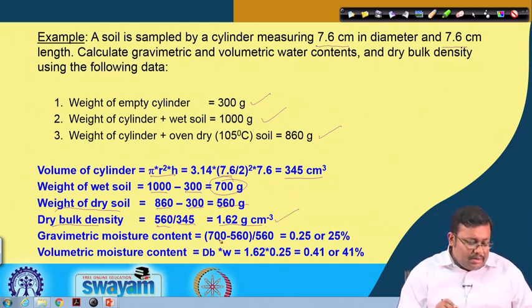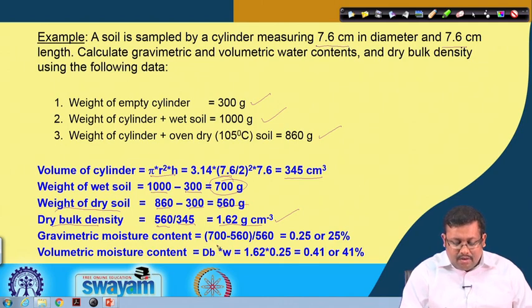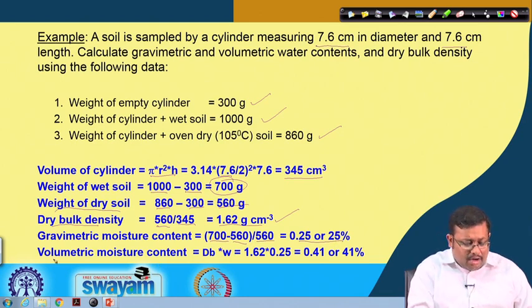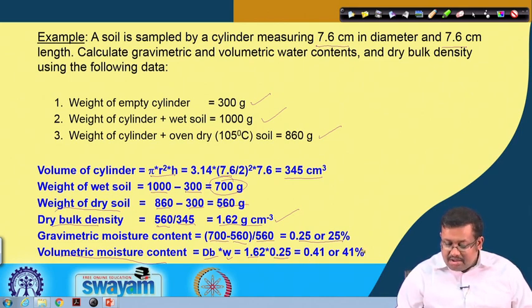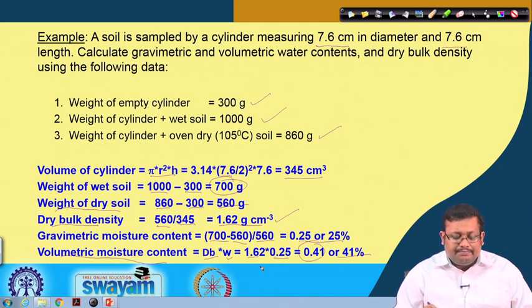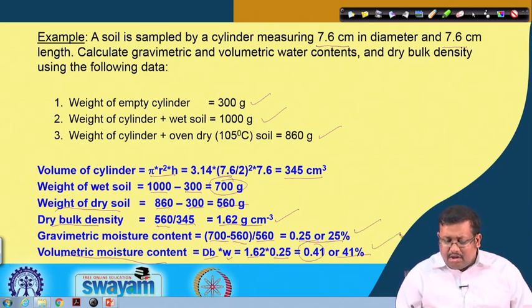Once we calculate dry bulk density, we calculate gravimetric moisture content: weight of moist soil minus weight of dry soil over weight of dry soil, giving 25 percent. For volumetric moisture content, we multiply gravimetric moisture content by dry bulk density: 1.62 times 0.25 equals 0.41, or 41 percent. We have now calculated both gravimetric and volumetric moisture content.